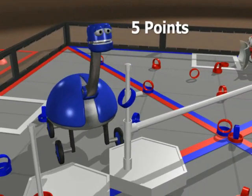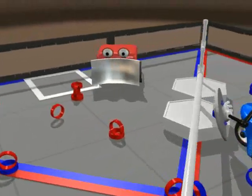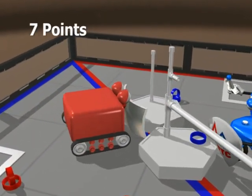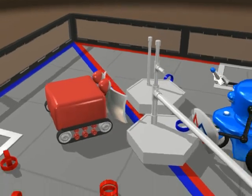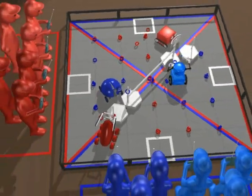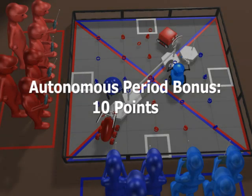Or five points for the 24-inch post. Possessing a single or paired goal is worth seven points. And there's a ten-point bonus for the alliance with most points at the end of the autonomous period.